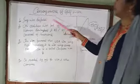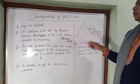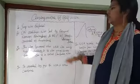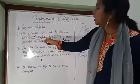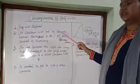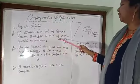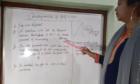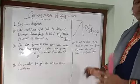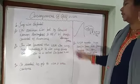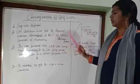Now we will study the consequences of the Gulf War. First, Iraq was defeated. Second, the UN coalition was led by General Norman Schwarzkopf, and 75 percent of the coalition force consisted of Americans. The UN coalition included 34 countries that attacked Iraq, with 75 percent of the soldiers being from the USA.